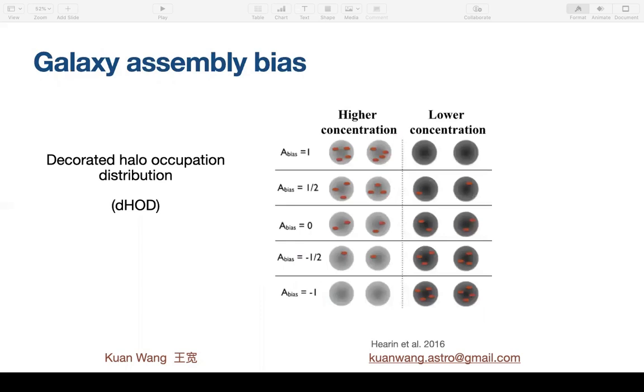However, besides the primary effect of halo mass, other halo properties might also play a role in determining the halo's galaxy content, such as concentration, spin, age, assembly history, and so on. We call this effect galaxy assembly bias. This cartoon here explains the concept, taking concentration as an example. At the same halo mass, positive assembly bias can put more galaxies into more concentrated halos, and negative assembly bias puts more galaxies into less concentrated halos. The decorated HOD models the central and satellite assembly bias separately with two more parameters, A_cen and A_sat, that control the strength of the effect.